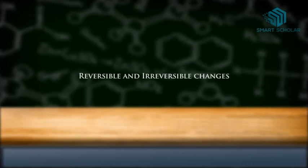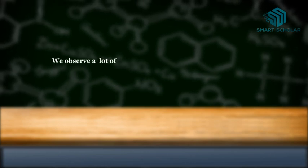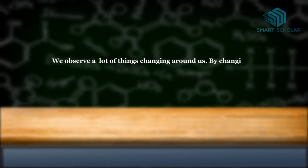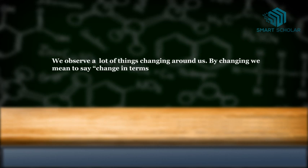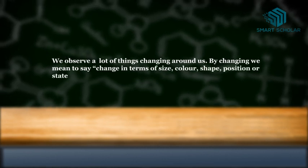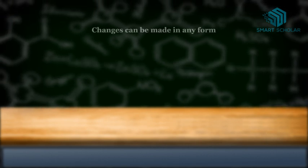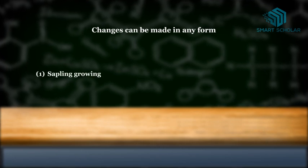Reversible and irreversible changes: We observe a lot of things changing around us. By changing, we mean to say change in terms of size, color, shape, position, or state of a substance. Change can be in any form—sapling growing into a plant, burning of paper, ice melting into water, and many more.